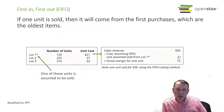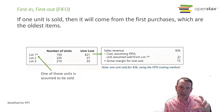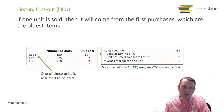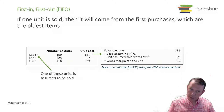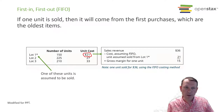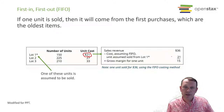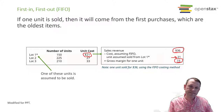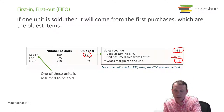For FIFO, the item we sold is one of our older ones. Lot number one is the oldest, so we sell one of those. Those older ones cost us $21 — back when we bought them it was a little cheaper. The sales price is the same but our cost is different because we're using another method, so our gross margin is different: $15.